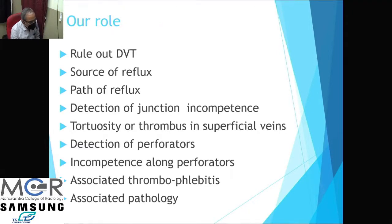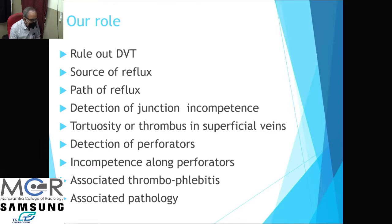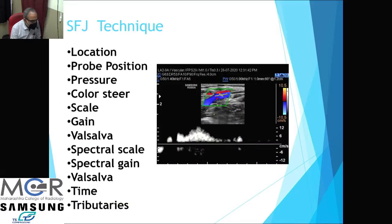Our role in evaluation of varicose veins is: first, to rule out deep venous thrombosis; second, to find the source of reflux; third, to define the path of reflux; and additionally, to detect junctional incompetence, tortuosity or thrombus in superficial veins, detection of perforators and their incompetence, and to rule out associated thrombophlebitis. While doing evaluation of the saphenofemoral junction, first locate the junction, use proper probe position, reduce pressure, and steer the color box optimally.